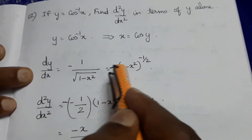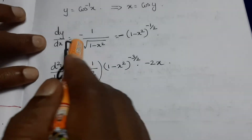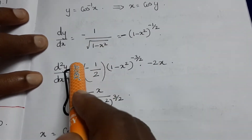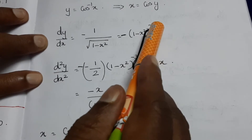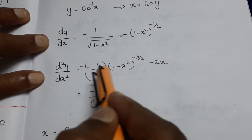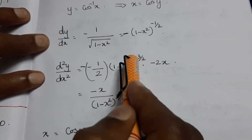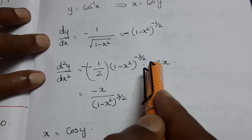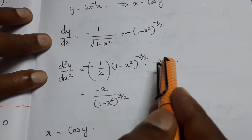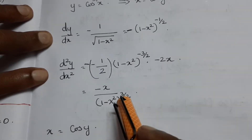Applying the power rule, we get d²y/dx² as minus 1 by 2 times 1 minus x square to the power minus 3 by 2, times minus 2x, which simplifies to minus x divided by 1 minus x square to the power 3 by 2.